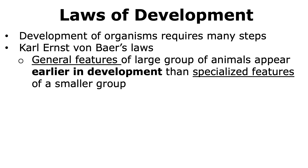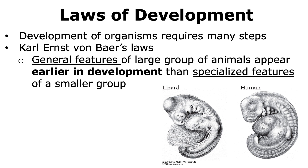According to his first law, the general features of a large group of animals appear earlier in development than do the specialized features of the smaller group. To understand this law, let's look at this picture. If you look at the embryo from a lizard and a human shown here, they look similar very early on in development. It should be remembered that lizards and humans look very different in their adult form. However, they both are vertebrates and hence belong to the same group, and that is why during embryonic development they show a lot of similarities, as observed in this picture.